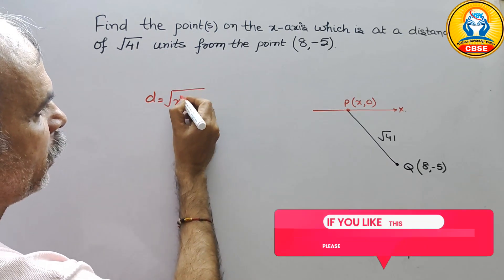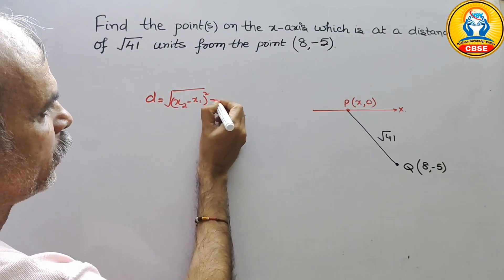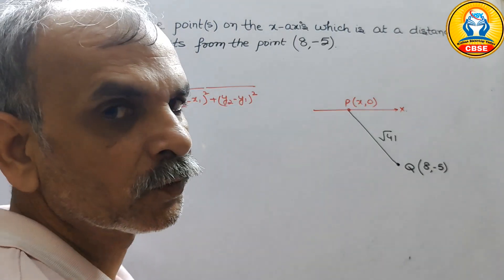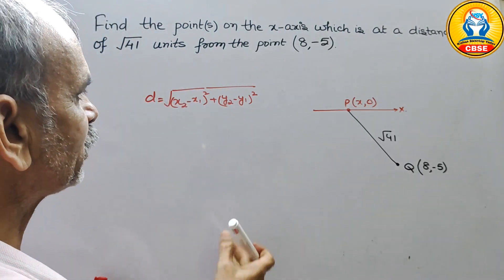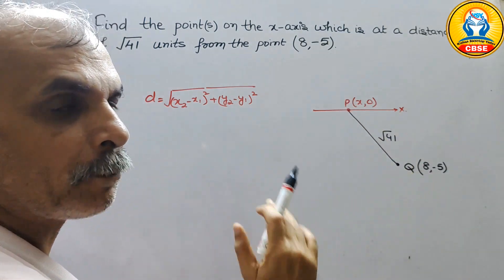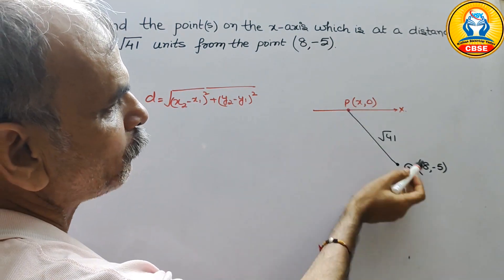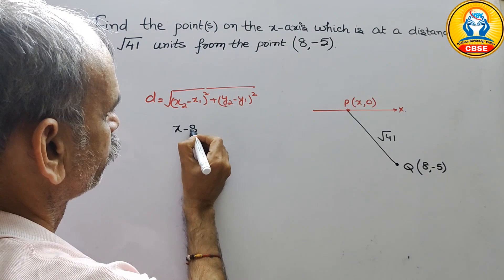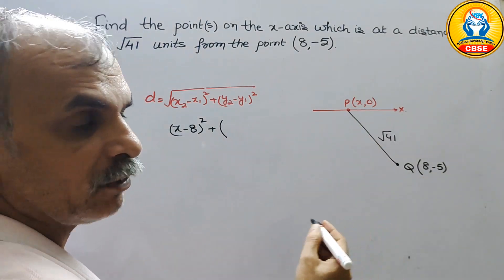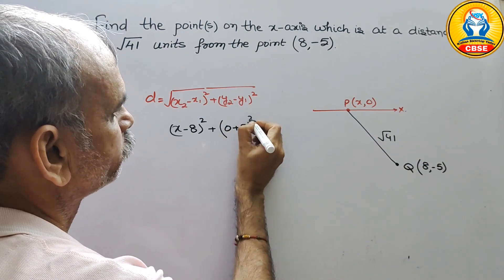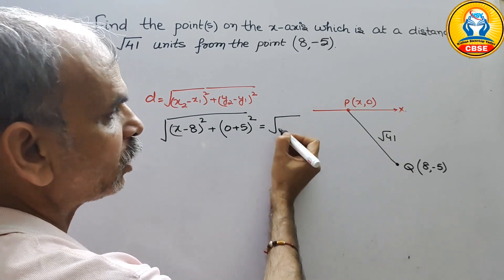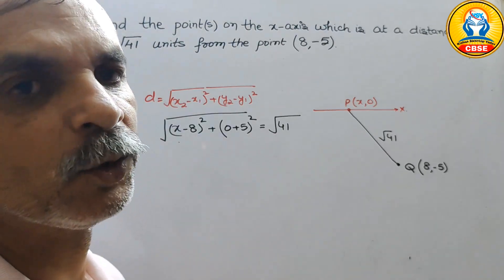root under (X2 minus X1) whole square plus (Y2 minus Y1) whole square. तो यहां पर X minus 8 whole square plus 0 minus of minus 5 is plus 5, तो (0 + 5) whole square, this is under root, that is equal to the total distance that is root 41.